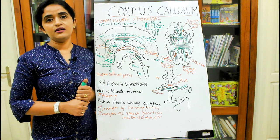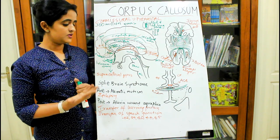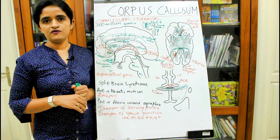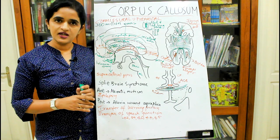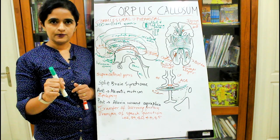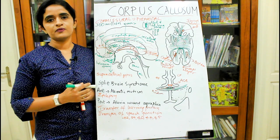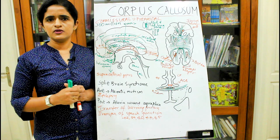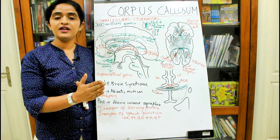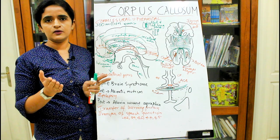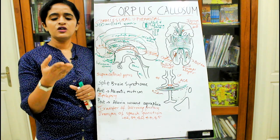Have you heard about split brain syndrome? Split brain syndrome, double brain syndrome, and twin brain are all synonyms. Split brain syndrome occurs when you have a congenitally absent corpus callosum or a surgically divided corpus callosum. In both cases, the corpus callosum is split. Suppose you train your right hand to write a letter 'A'.